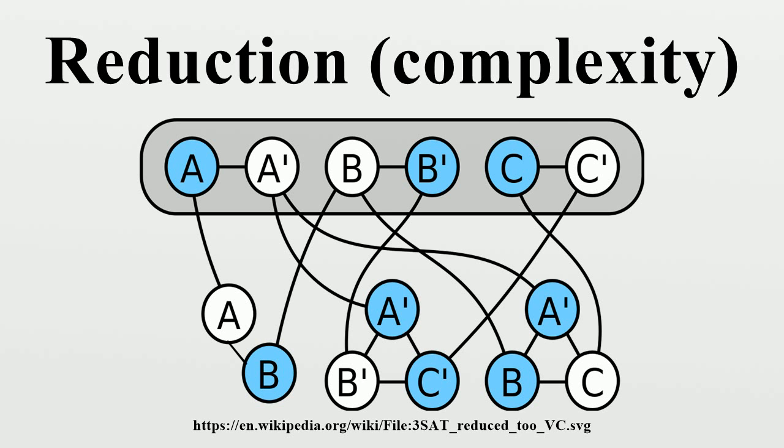As described in the example above, there are two main types of reductions used in computational complexity: the many-one reduction and the Turing reduction. Many-one reductions map instances of one problem to instances of another. Turing reductions compute the solution to one problem, assuming the other problem is easy to solve. The many-one reduction is a stronger type of Turing reduction, and is more effective at separating problems into distinct complexity classes. However, the increased restrictions on many-one reductions make them more difficult to find.